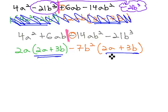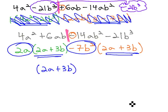Notice this time, we were able to get a matching binomial factor of 2a plus 3b. This is the first factor of our final solution. The other factor comes from what's left when we factor 2a plus 3b out, and that would be 2a minus 7b squared.